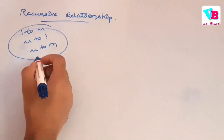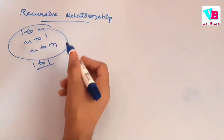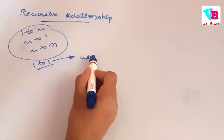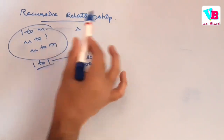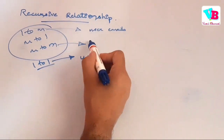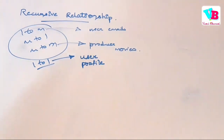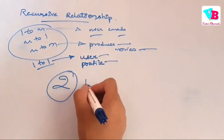We covered different types, including one to one. The point is, with these, we are having a relationship between two different entities. For example, one to one was user and profile. One to many was user and emails. And many to many was producer and movies. In all these relationships, the two participating entities are different.